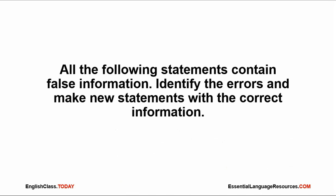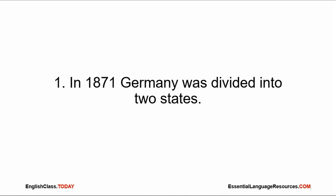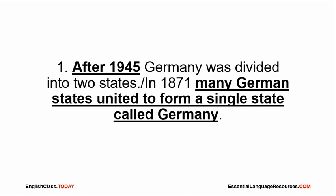All the following statements contain false information. Identify the errors and make new statements with the correct information. One: 'In 1871, Germany was divided into two states.' The correct statement: After 1945, Germany was divided into two states. Or: In 1871, many German states united to form a single state called Germany.